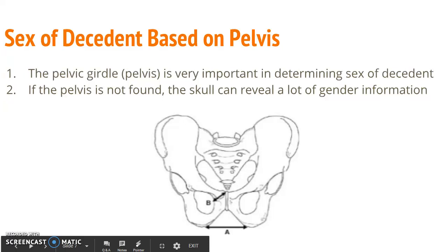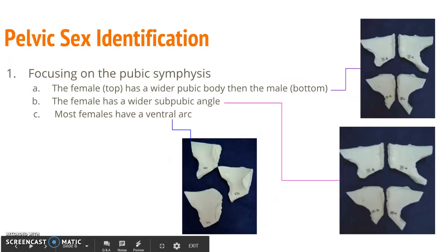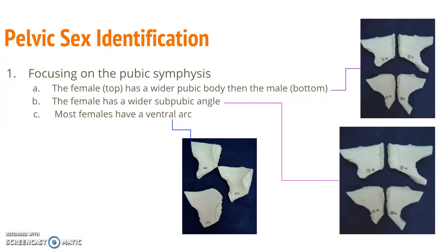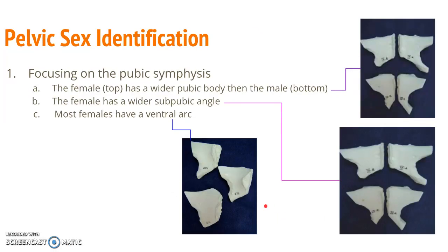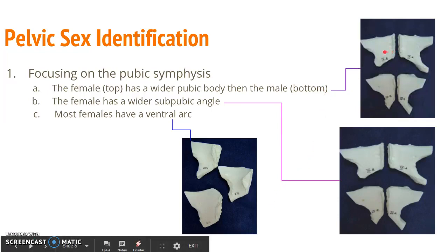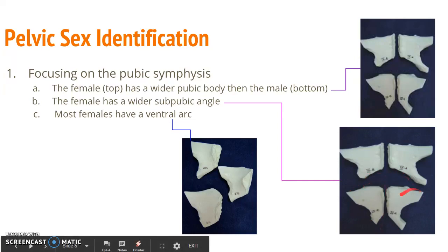To determine the sex of the decedent, you can use the pelvis or the skull. The pelvis is very important because it has quite a few differences between male and female. The three main pieces we look at deal with the pubic symphysis. The female will have a wider pubic body. They have a wider subpubic angle or subpubic concavity — this angle at the bottom is larger and more obtuse in females, and more acute in males.